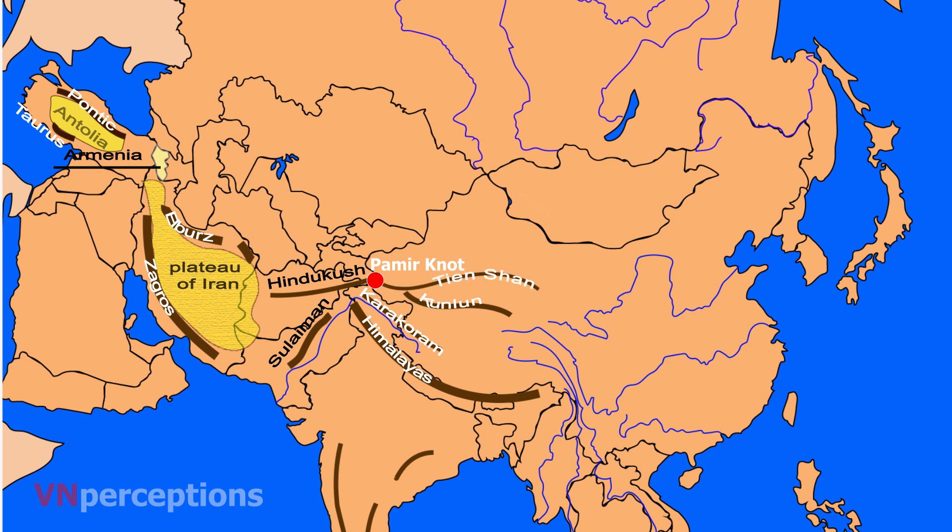The plateau of Anatolia is enclosed between the Pontic and the Taurus Mountains. To the east of the Pamir Knot lie five mountain ranges: the Himalayas, Karakoram, Kunlun, Altyn Tagh, and Tian Shan. The Himalayas run southeastward into North India and Nepal. They are the highest mountain ranges in the world, and Mount Everest, the world's highest peak, is in this range.